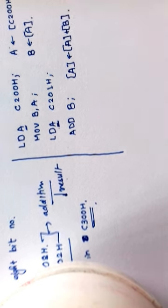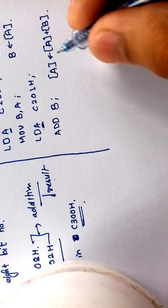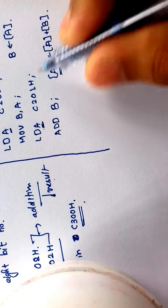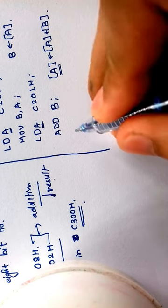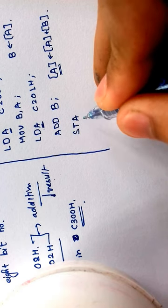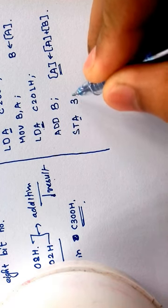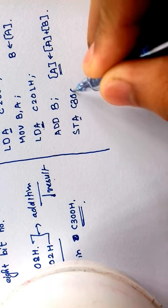After this, we have the result stored in the accumulator. Now we have the STA command which will move the content of accumulator to the desired memory address, that is C001H.